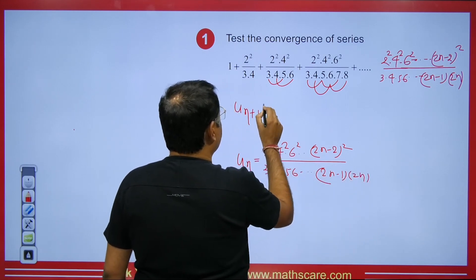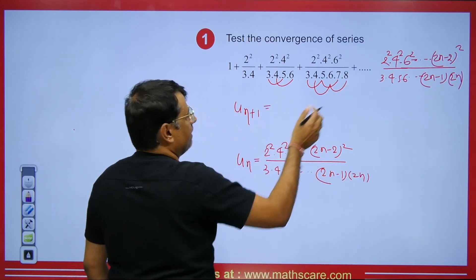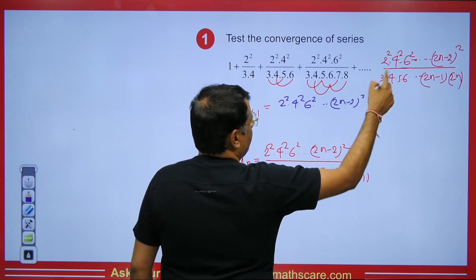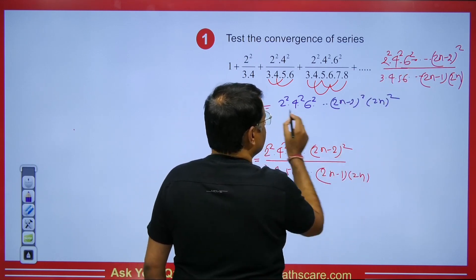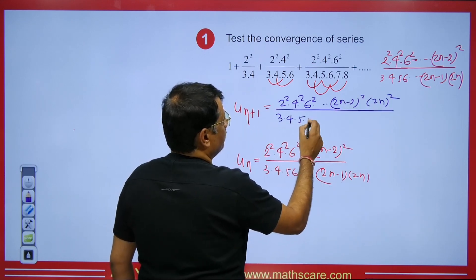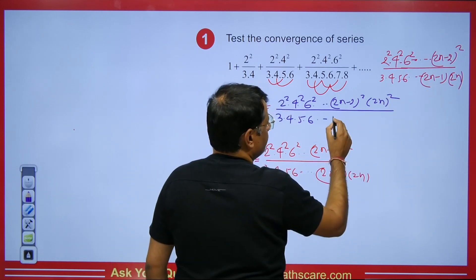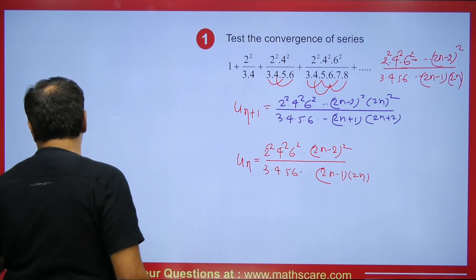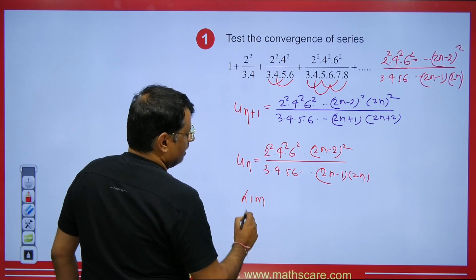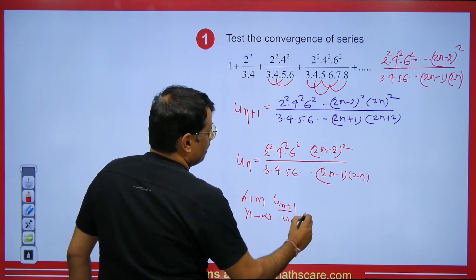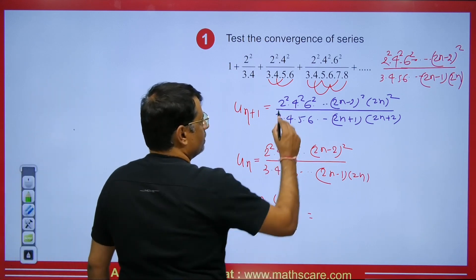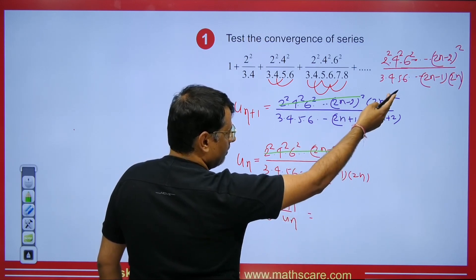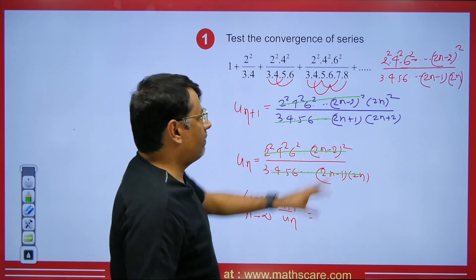For u_{n+1}, we replace n with n+1, so the numerator gains the next factor (2n)² and the denominator gains (2n+1)(2n+2). We apply the D'Alembert Ratio Test: limit as n tends to infinity of u_{n+1}/u_n. After cancellation, we are left with (2n)² divided by (2n+1)(2n+2).